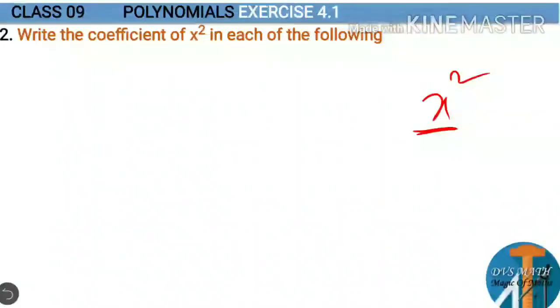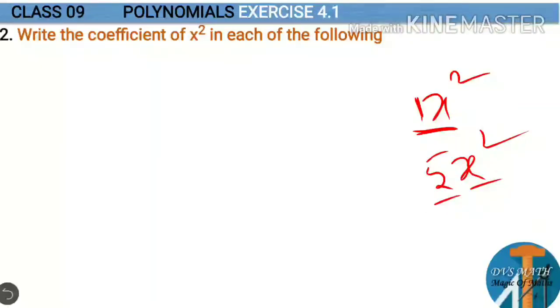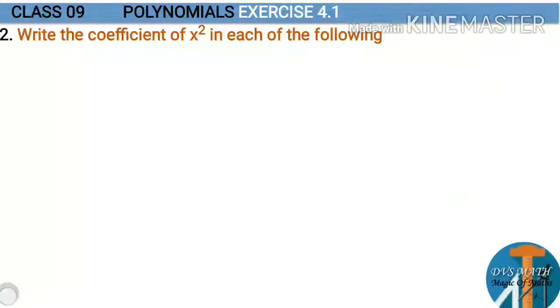The coefficient is the constant number multiplied to the variable. For example, if we consider x square with nothing in front of it, you have to take it as 1. So the coefficient of x square is 1. If we consider 5x square, the coefficient is 5. Here they are asking specifically for the coefficient of x square.